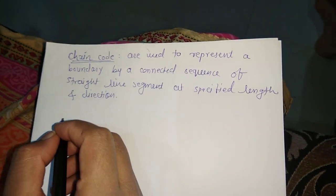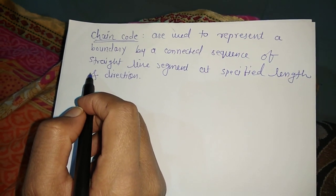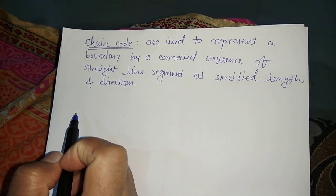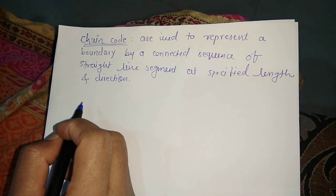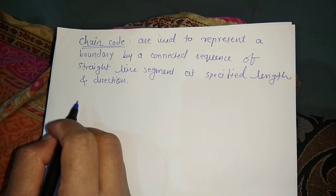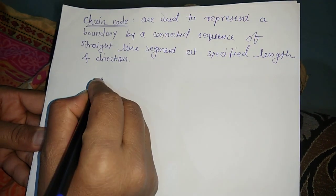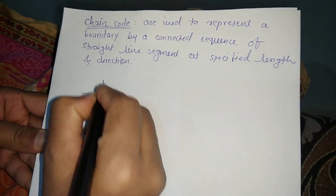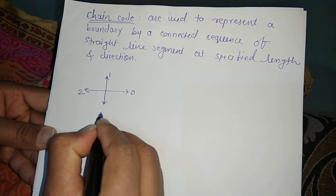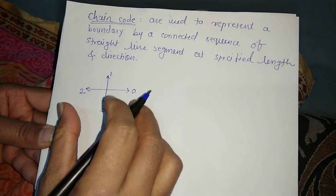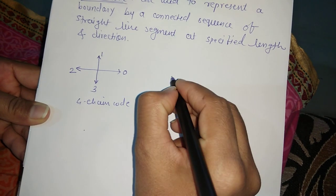In this video we'll see how to find the chain code, shape number, and order if the shape of the image is given. This is related to feature extraction and boundary representation of an image. For the 4-chain code, you follow this diagram: left, right, up, and down — corresponding to codes 0, 1, 2, and 3.